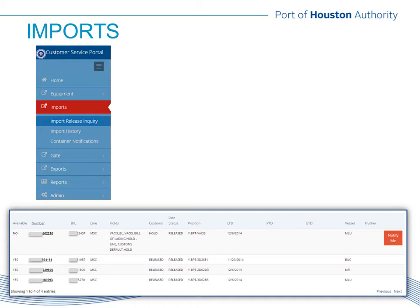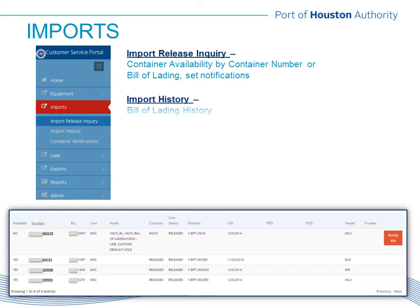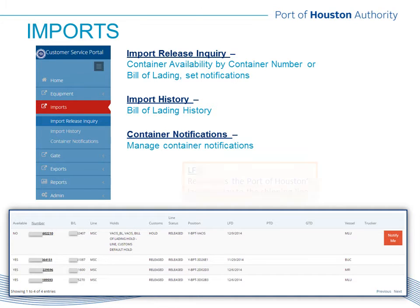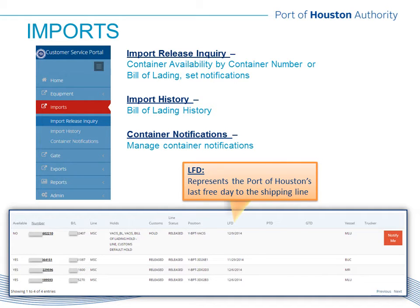Next is Imports. The Import option will provide details for import availability, bill of lading history, and the ability to manage availability notifications. Providing customers with information regarding equipment availability is the most common question we receive by phone or email, and this information is made available to Links users in this section of the portal. Containers can be queried in bulk or one at a time — lists can be pasted from another document such as an email, Excel file, or Word document. The LFD, or Last Free Day, represents the Port of Houston's Last Free Day to the shipping line. The actual free time that the line provides to the end user may or may not be different than the Port of Houston's Last Free Day, so it is best to contact the shipping line to confirm the container's true Last Free Day.